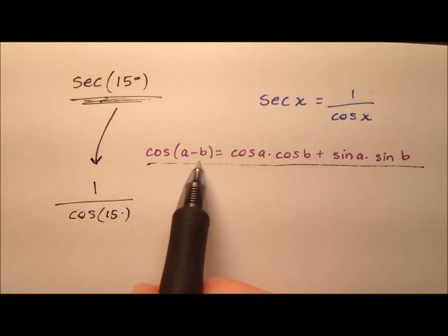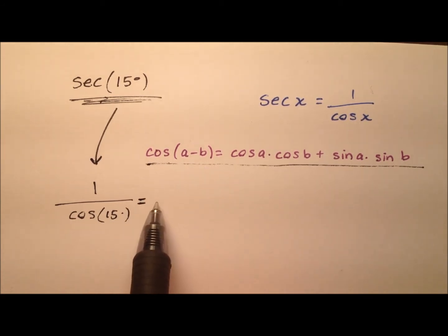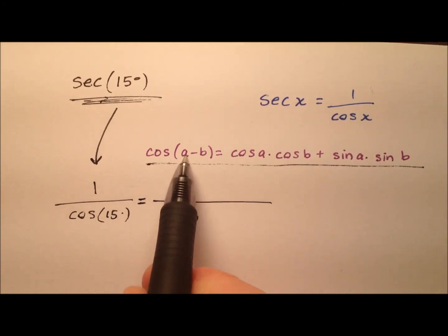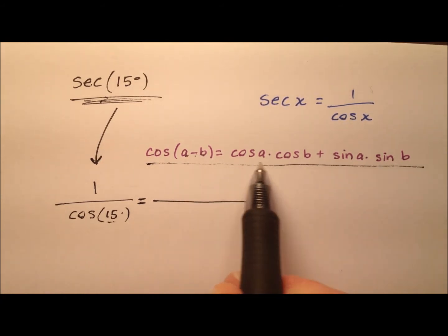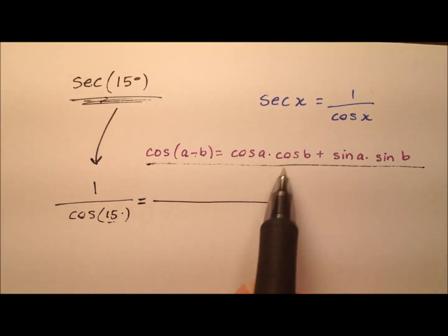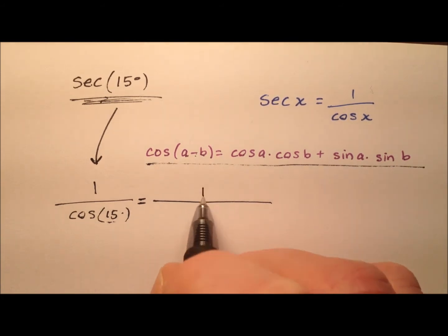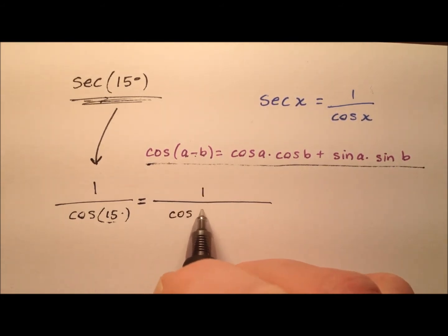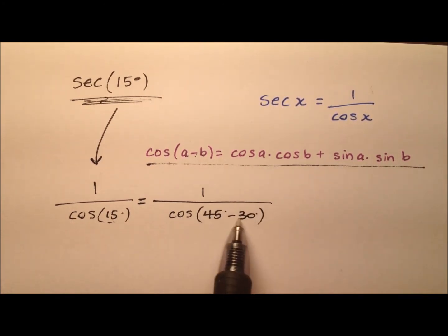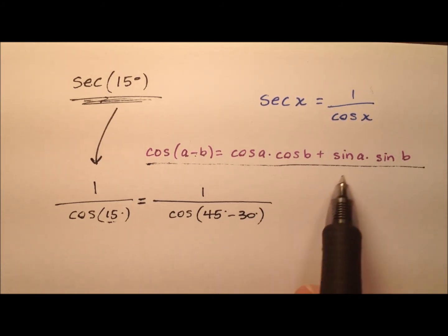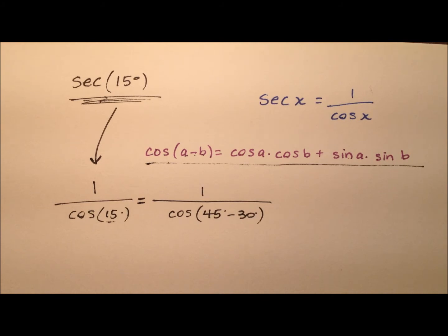I've written down the difference identity, or difference formula, for cosine, and we can use this. In order to use it, I have a minus b inside, so I need two angles that subtract to make 15 degrees, but that are easy to work with — meaning I know the values for the sine and cosine of those angles. So we'll use cosine of 45 degrees minus 30 degrees, because 45 minus 30 is 15, and I know the sine and cosine for both 45 and 30 degrees.